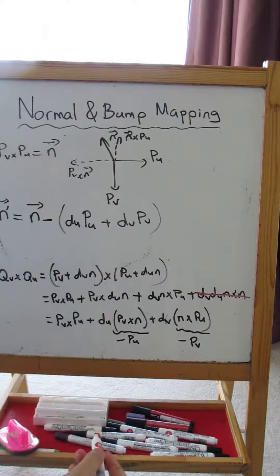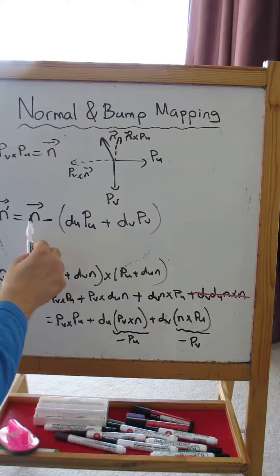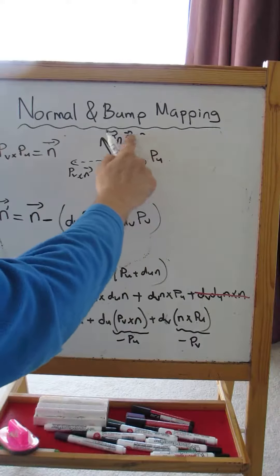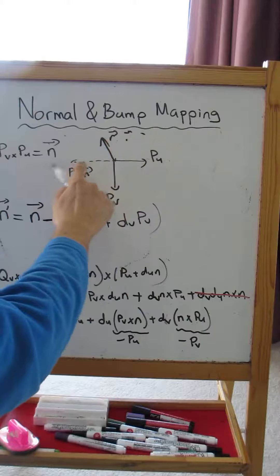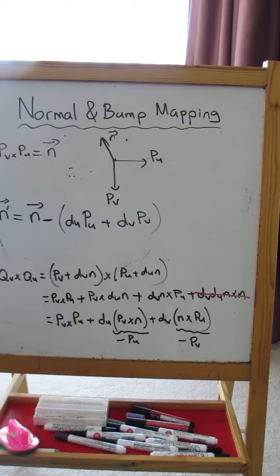So what does it represent? It says that I am going to have the original surface normal. So let's say we have the original surface normal here, we have n. Now this original surface normal